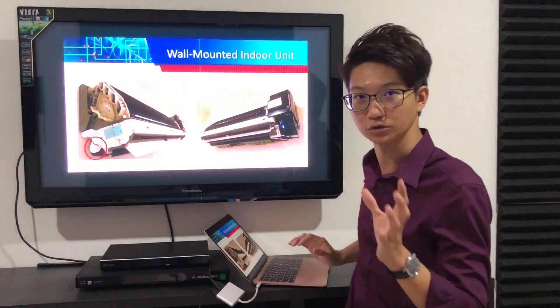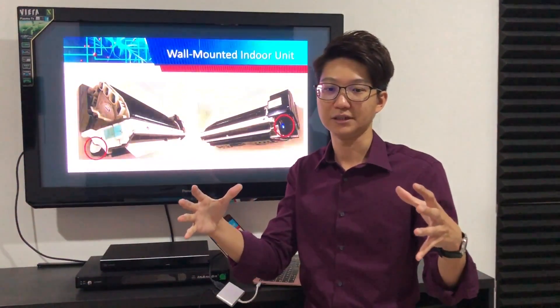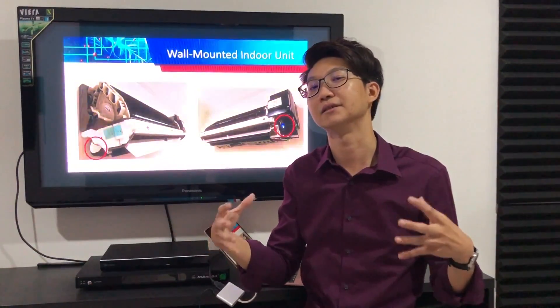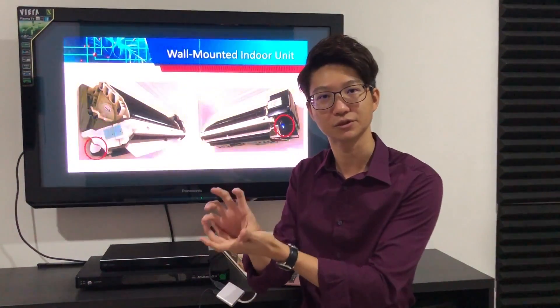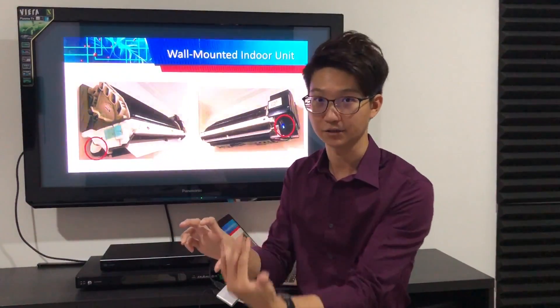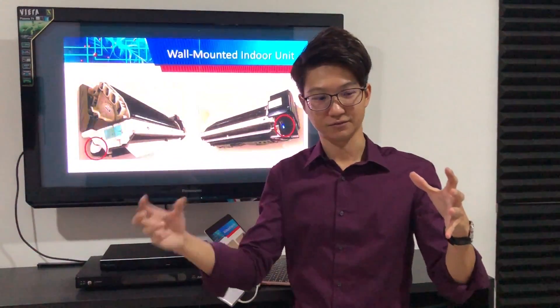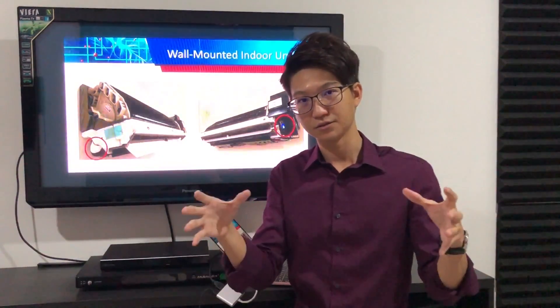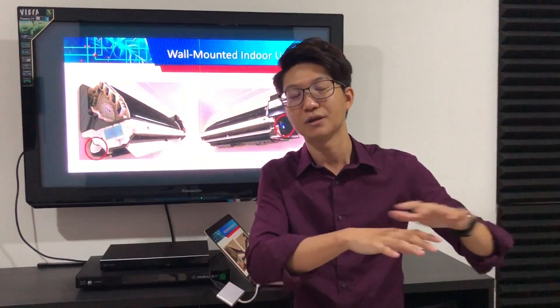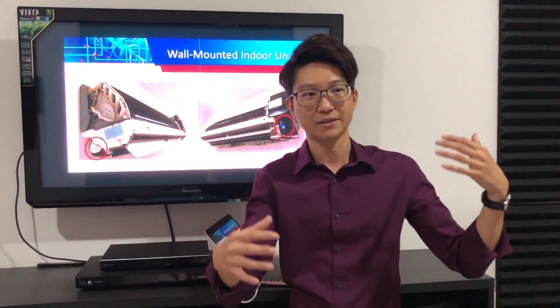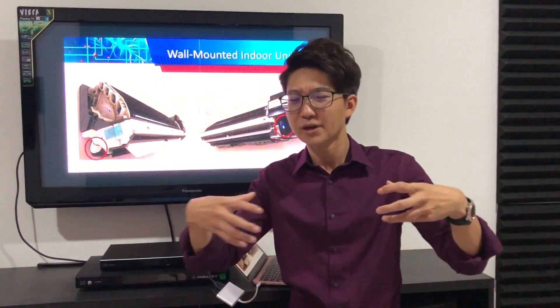Most indoor units have a temperature sensor — so basically the indoor unit acts as a thermostat. In the commercial sector, a separate thermostat is used to sense temperature and control the air conditioner, but now the indoor unit itself has a built-in temperature sensor. That's why the location of the indoor unit is very important. If you put it at the corner, not only is air distribution poor, but the temperature sensor won't read the actual average room temperature — causing insufficient or excessive cooling. Usually the indoor unit should be placed somewhere near the center of the room.